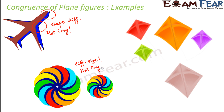Look at the kites — do you think that all the kites are congruent to each other? Definitely not, because if you look at the green, red, orange and purple kite, all of them have different shapes, so they are definitely not congruent. However, if you look at the orange kite and the light brown kite, they have the same shape and same size, so therefore we can say that these two kites are congruent. However, all the others, because of their different sizes, are not congruent.